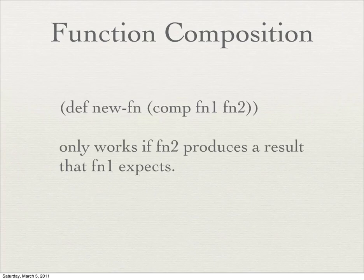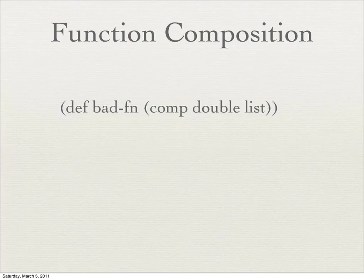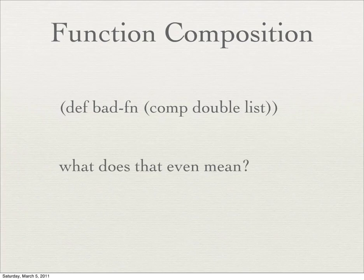There's one caveat I want to point out: comp only works if fn2 produces a result that fn1 can handle. If it doesn't, then things blow up. An example is if you try to compose 'list' with our function 'double'. List takes a value, wraps it into a list structure, and passes that to double. Well, double is expecting an int and doesn't know what to do with a list. That doesn't make any sense — to double a list in this context.